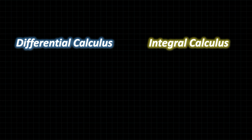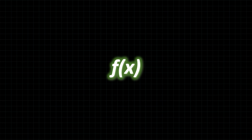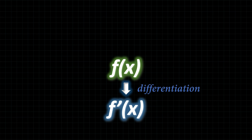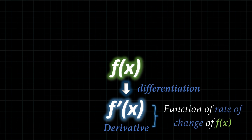One final note to bring this video full circle: the two branches of calculus — differential calculus and integral calculus — are actually very closely related. I know it's weird, right? How is finding the slope in any way related to finding areas and volume? Suppose we have a function denoted as f(x). If we were to differentiate it, we would find f'(x), also known as the derivative, which is a function that helps us find the slope at any particular point on the original function f(x).